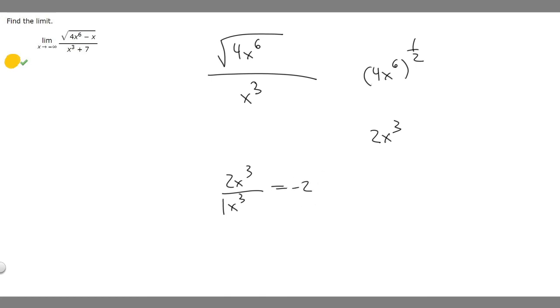Keep that in mind whenever you approach negative infinity. Check and see if the exponent is going to be odd or even. Because if it's odd, you're going to add a minus sign. If it's even, you don't have to worry about it because it would just cancel out, because minus 2 squared is 4. The minus sign goes away. The answer to this one is going to be minus 2.